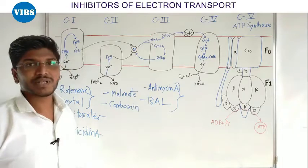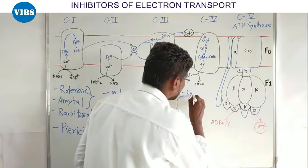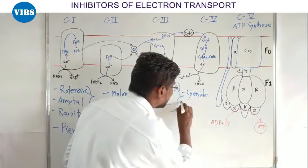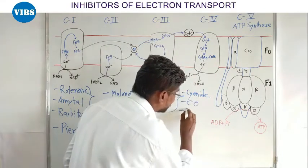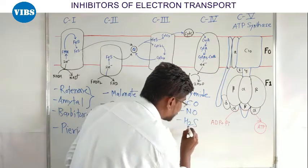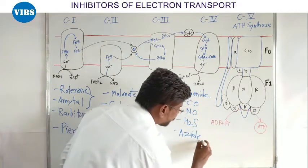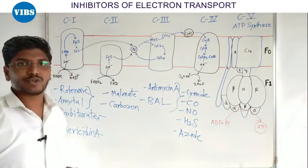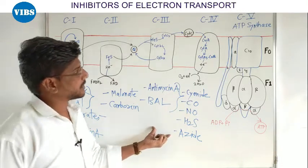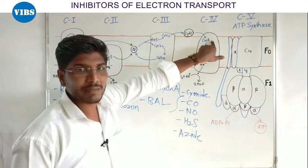Complex IV is cytochrome oxidase and its inhibitors are: Cyanide, Carbon monoxide, Nitric oxide, and Hydrogen sulfide (Azide). These inhibitors block the electron transport at complex IV. Here cytochrome C passes electrons to copper A center of complex IV.